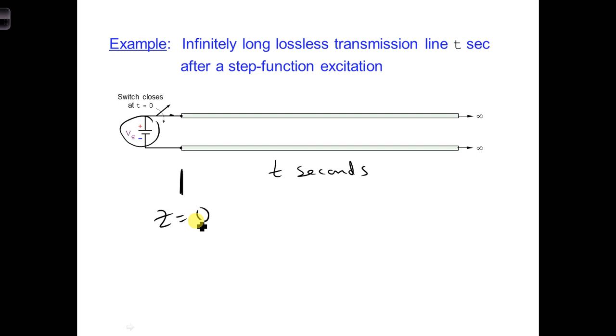And in fact, this is typically what is done when we analyze transmission lines in the time domain. After the switch closes, we have a constant voltage applied to the end of the transmission line on the left.